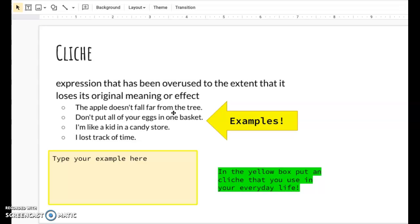So the apple doesn't fall far from the tree. Don't put all your eggs in one basket. I'm like a kid in a candy store. I lost track of time. So in the yellow box, go find a cliché that you use in your everyday life or that you see in your everyday life.